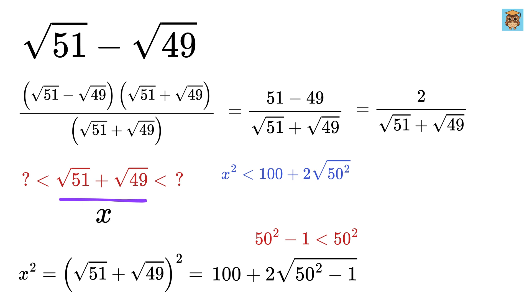Or it will be less than 100 plus 2 multiplied by 50, which equals 200. Similarly, using square root of 49, it will be greater than 100 plus 2 multiplied by 49 or 198.